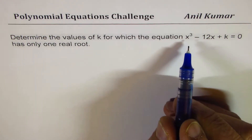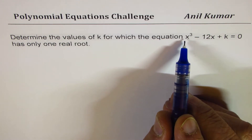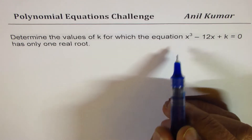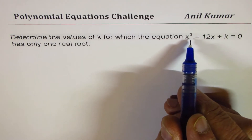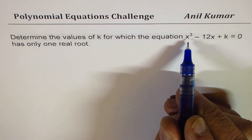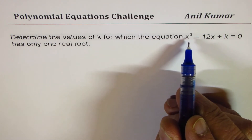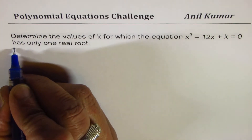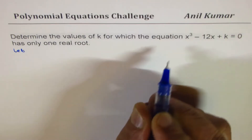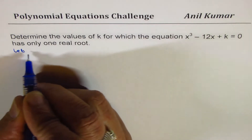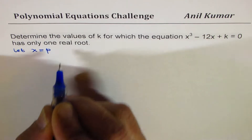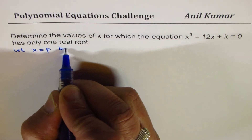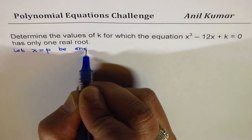Now since this is a cubic equation and the leading coefficient is positive, it will go from quadrant 3 to quadrant 1, so it has to cross the x-axis and will have at least one real root. Maximum it could have three. So let us assume that the real root is at x = p.